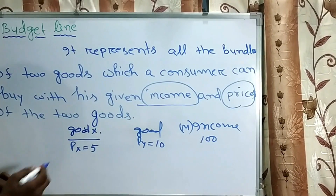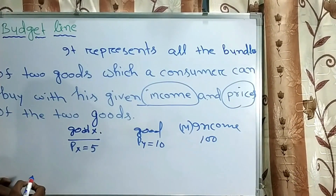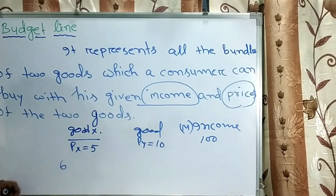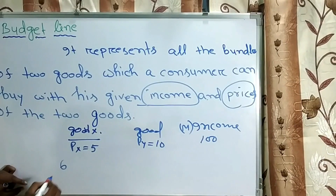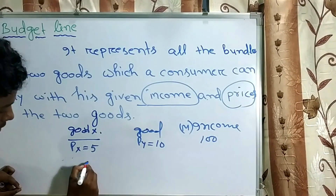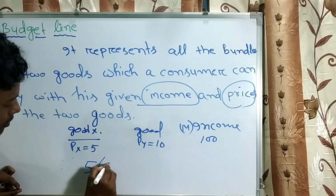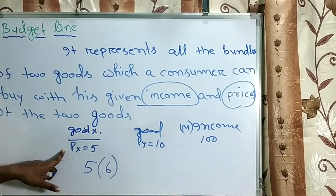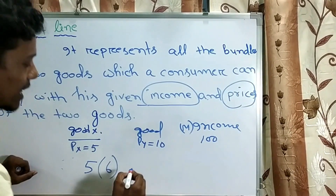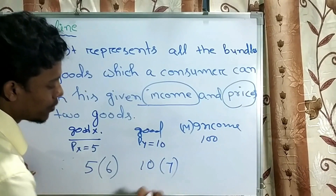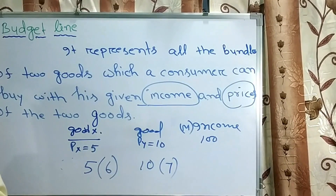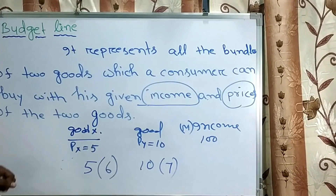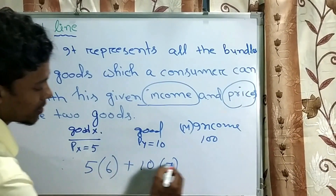Now with this given information, suppose the consumer is consuming 6 units of good X. Then the price of good X multiplied by 6 units means he is spending 30 rupees. He still has 70 rupees remaining, so he can purchase 7 units of good Y with his given income of 100.